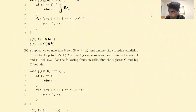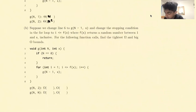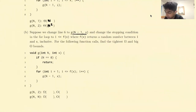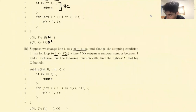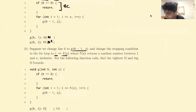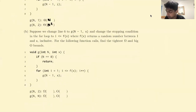Moving on to the next part. Now we're going to change line 6 to g(n minus 1, x) and change the stopping condition in the for loop to i is less than f(x). All we're doing is that now we have an x instead of a fixed value, and we do i less than f(x). f returns a random number between 1 and x inclusive.